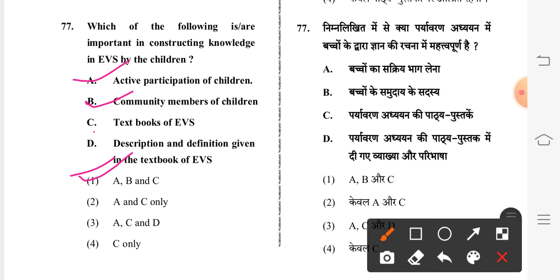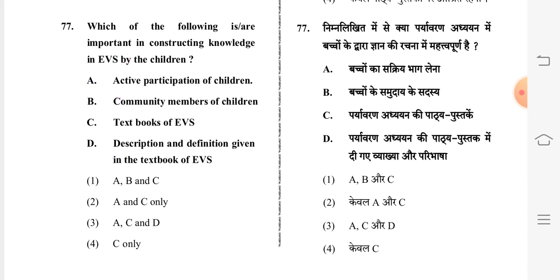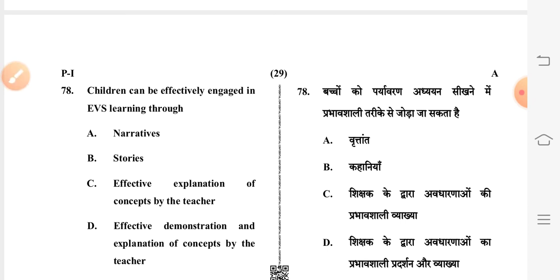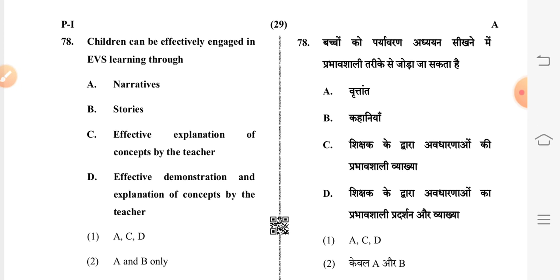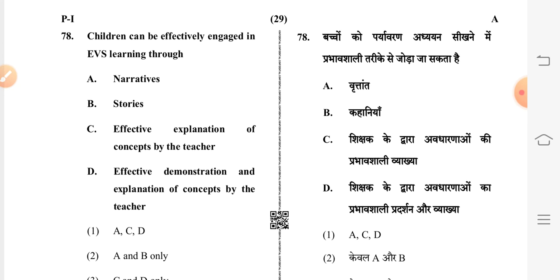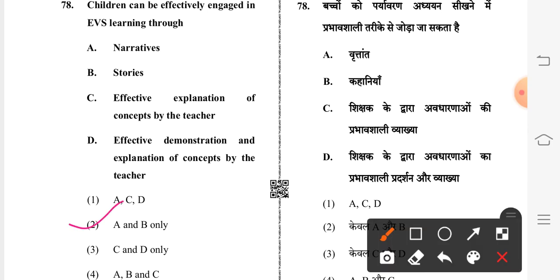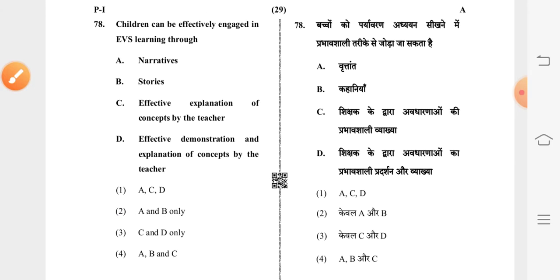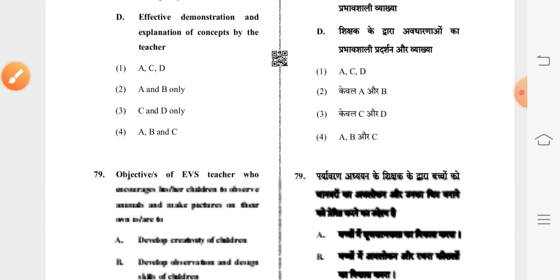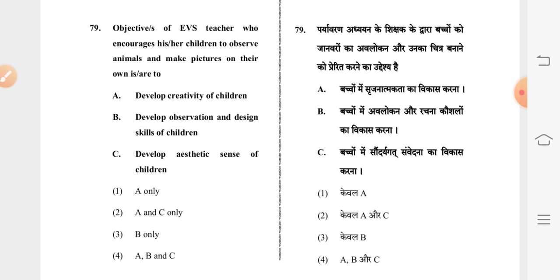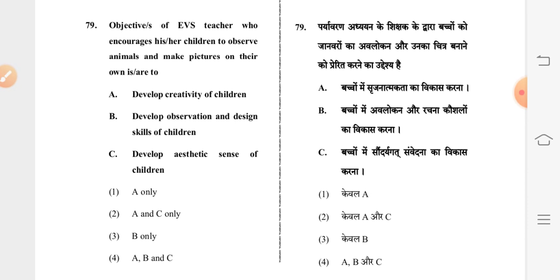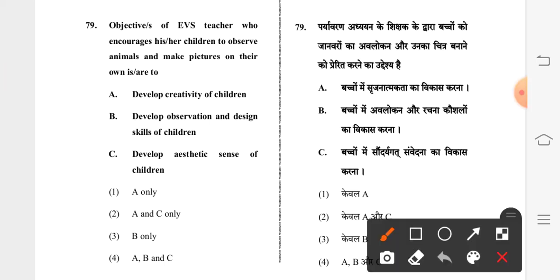Question 78: children can be effectively engaged in EVS learning through — second option is correct: A and B only, meaning narratives and stories. Question 79: the objectives of an EVS teacher who engages children to observe animals and make pictures on their own — fourth option is correct: A, B, C — develop creativity of children, develop observation and design skills, and develop aesthetic sense of children.